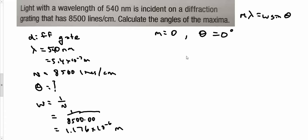When m is 1, I'm going to get sine theta is equal to m lambda over w, which is 1 times 5.4 times 10 to the minus 7, all over this 1.176 times 10 to the minus 6. And theta will work out to be 27 degrees.